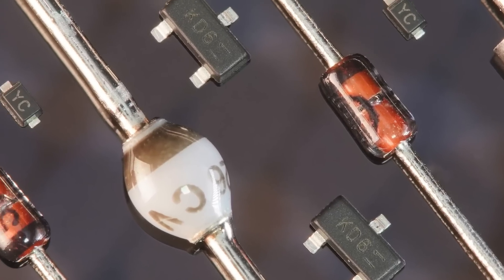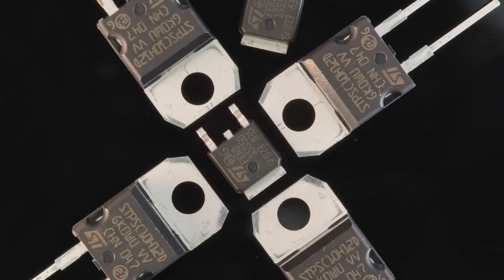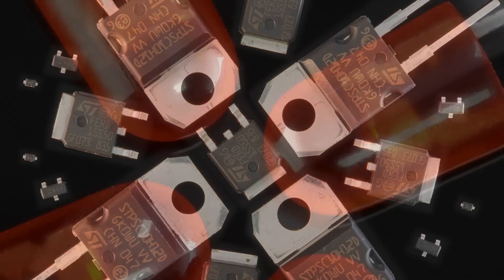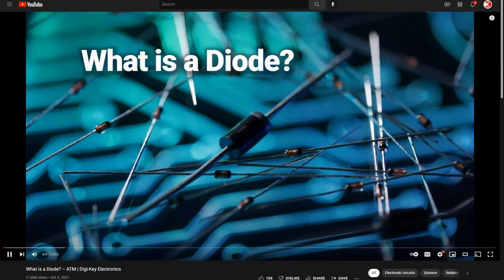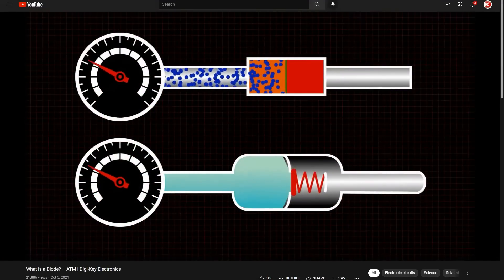Diodes are electronic devices that allow the flow of current in one direction and block or limit current flow in the opposite direction. To learn more about what diodes are and how they function, take a look at our video titled What is a Diode?